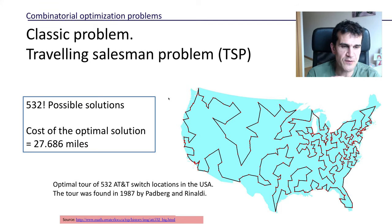To conclude this video, this is a beautiful example of the optimal solution of a traveling salesman problem with 532 locations—these are the switch locations of AT&T, the American Telephone and Telegraph Company. What we can see here is the optimal solution found by Padberg and Rinaldi using a branch and cut algorithm. Okay guys, I'll see you in the next video. Thanks a lot for watching, see you later.